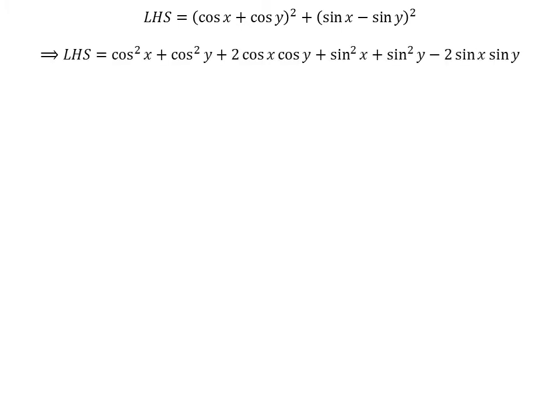Expansion of the squared terms gives us: the left-hand side is equal to square of cosine of x plus square of cosine of y plus 2 times cosine of x times cosine of y, plus square of sine of x plus square of sine of y minus 2 times sine of x times sine of y.